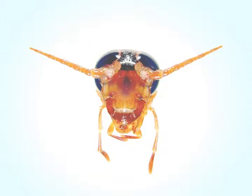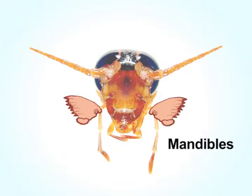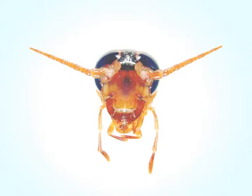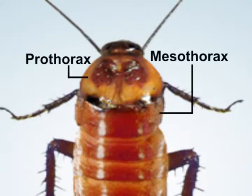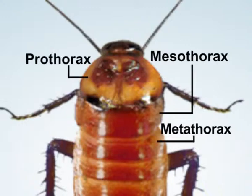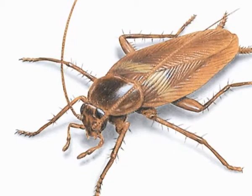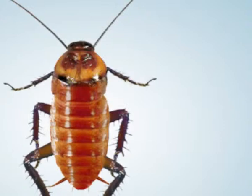The mouth parts include a labrum, a pair of mandibles, two pairs of maxillae and a hypopharynx which acts like a tongue. The thorax is formed by three independent segments: prothorax, mesothorax and metathorax. Each thoracic segment bears a pair of walking legs on the ventral side. Dorsally, the mesothorax and metathorax each bear a pair of wings.